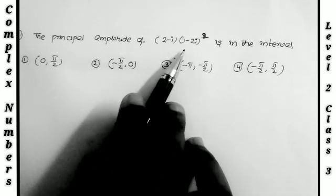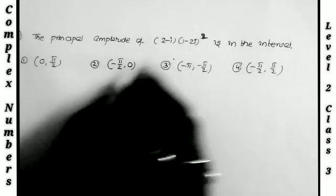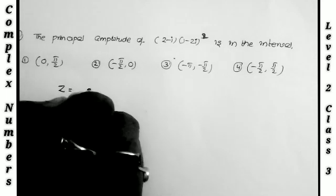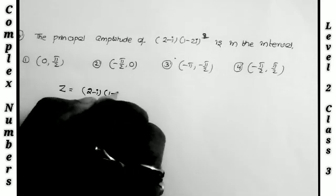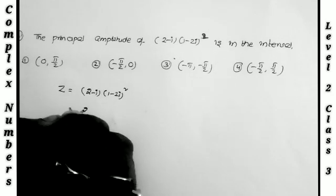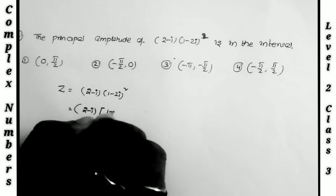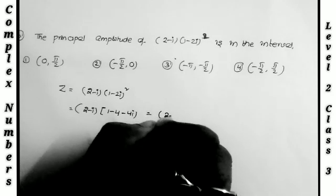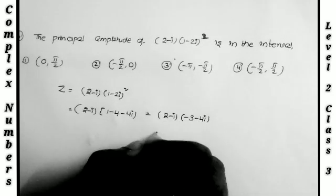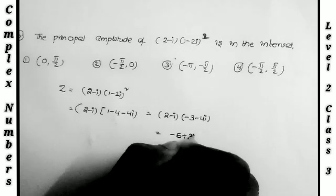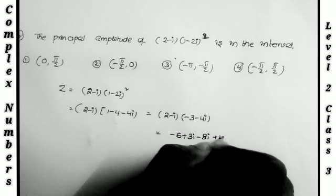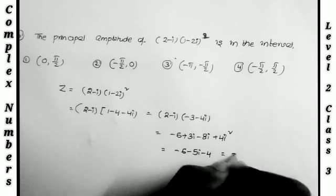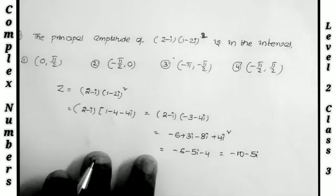The next problem: find the principal amplitude of (2 - i)(1 - 2i)². Let z = (2 - i)(1 - 2i)². Expanding: (1 - 2i)² = 1 + 4i² - 4i = 1 - 4 - 4i = -3 - 4i. So z = (2 - i)(-3 - 4i) = -6 - 8i + 3i + 4i² = -6 - 5i - 4 = -10 - 5i.